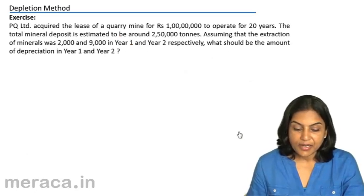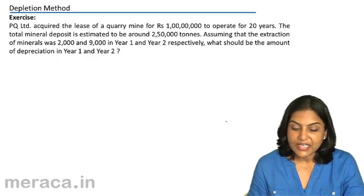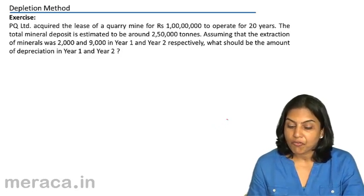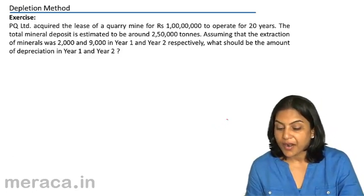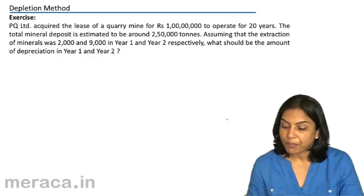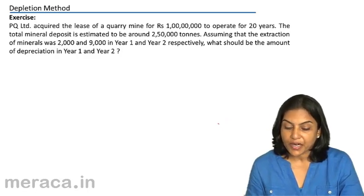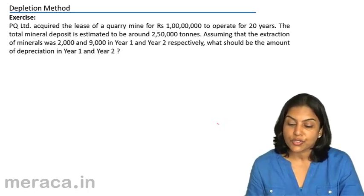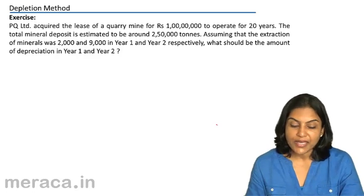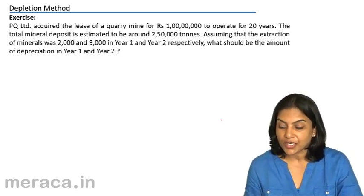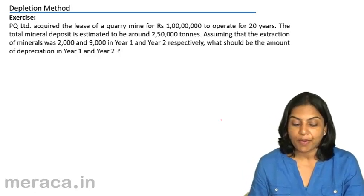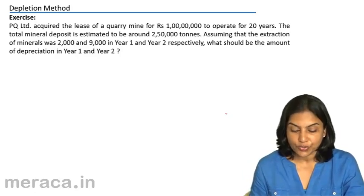Considering an example: suppose P Limited acquired a lease of a quarry mine for rupees 100 lakhs to operate for 20 years. The total mineral deposit is estimated to be around 2,50,000 tons. Assuming that the extraction of minerals was 2,000 tons and 9,000 tons in year 1 and year 2 respectively, what should be the amount of depreciation in year 1 and year 2?